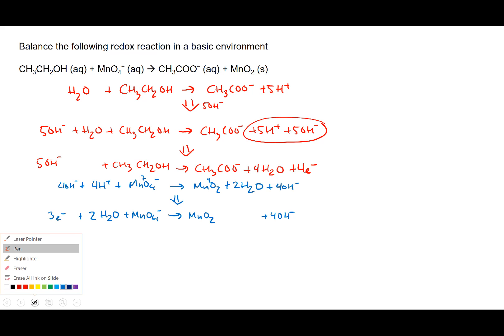Now we add both half reactions together, but first we have to balance the electrons. The ethanol reaction produces 4 electrons while the permanganate reaction consumes 3. So we multiply the ethanol half reaction by 3 and the permanganate half reaction by 4 so everything balances out.